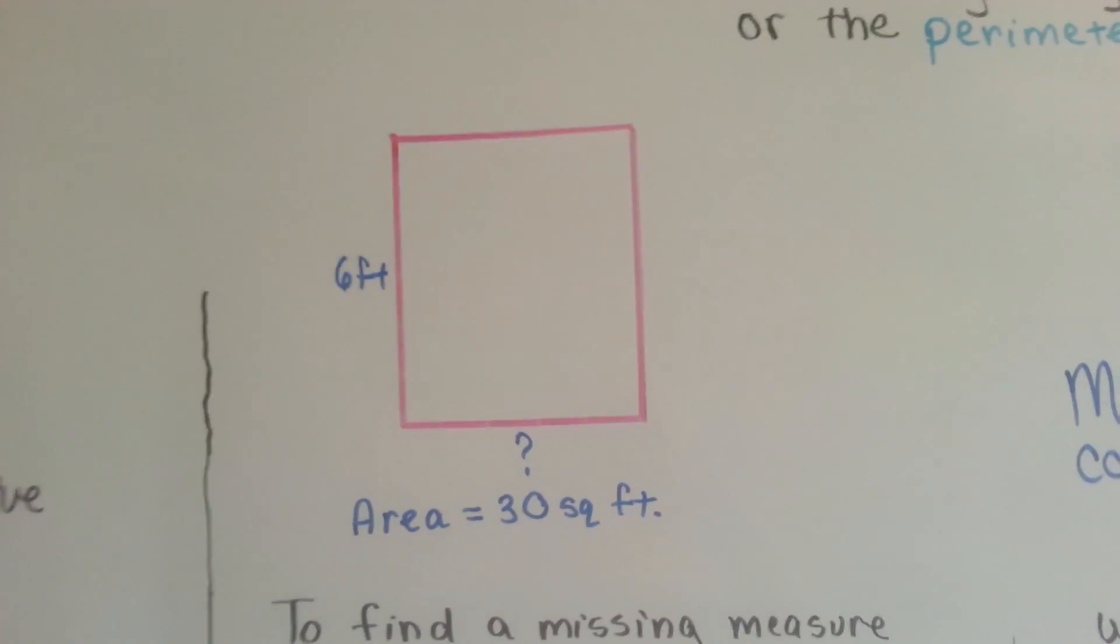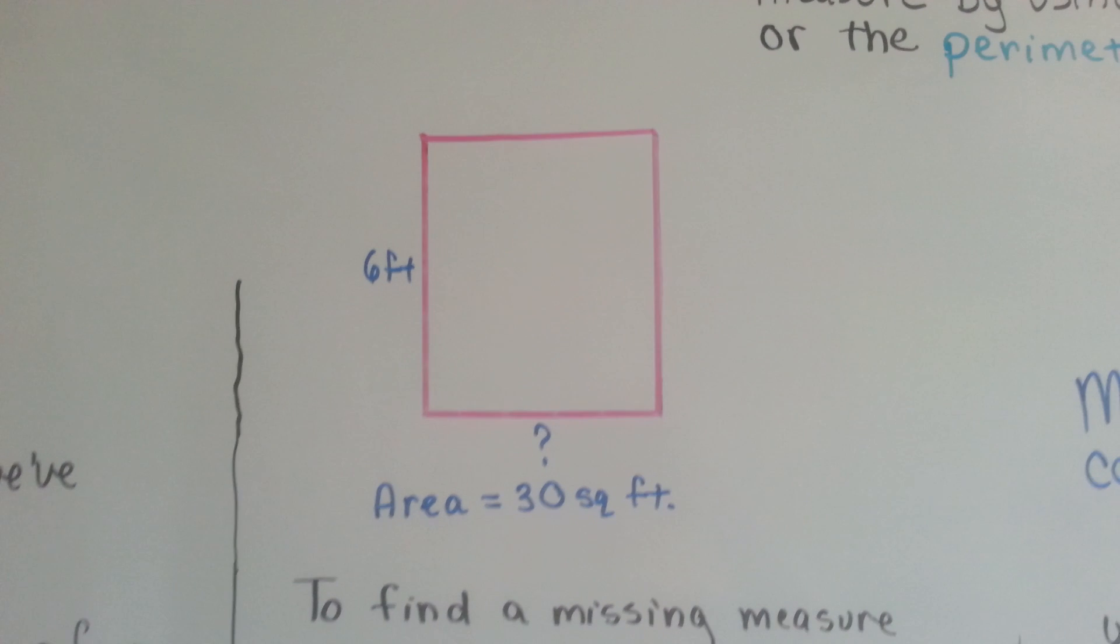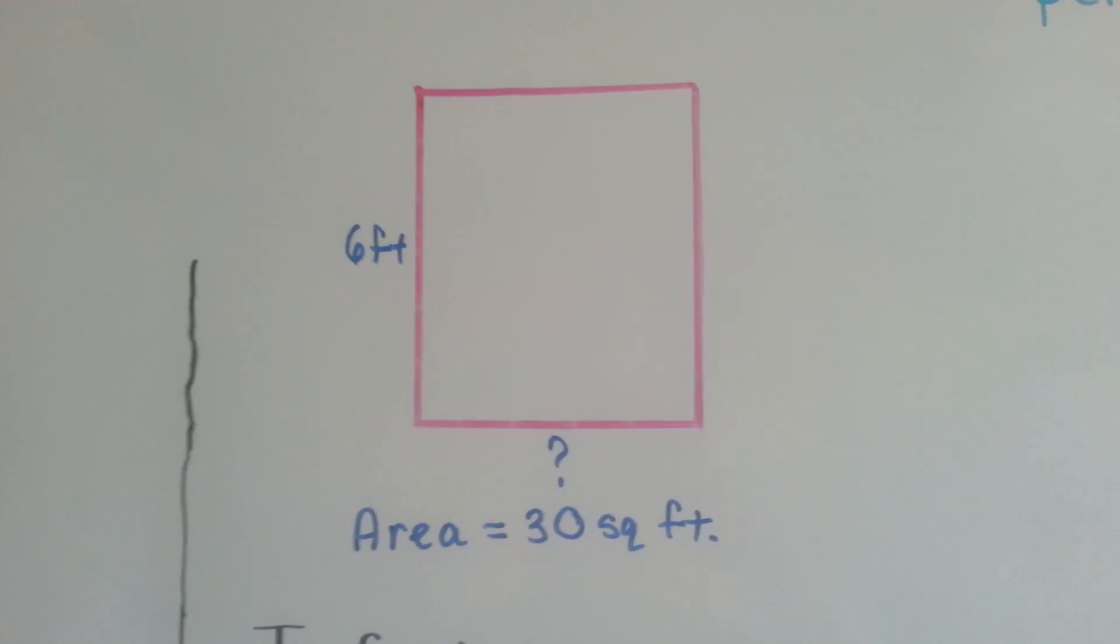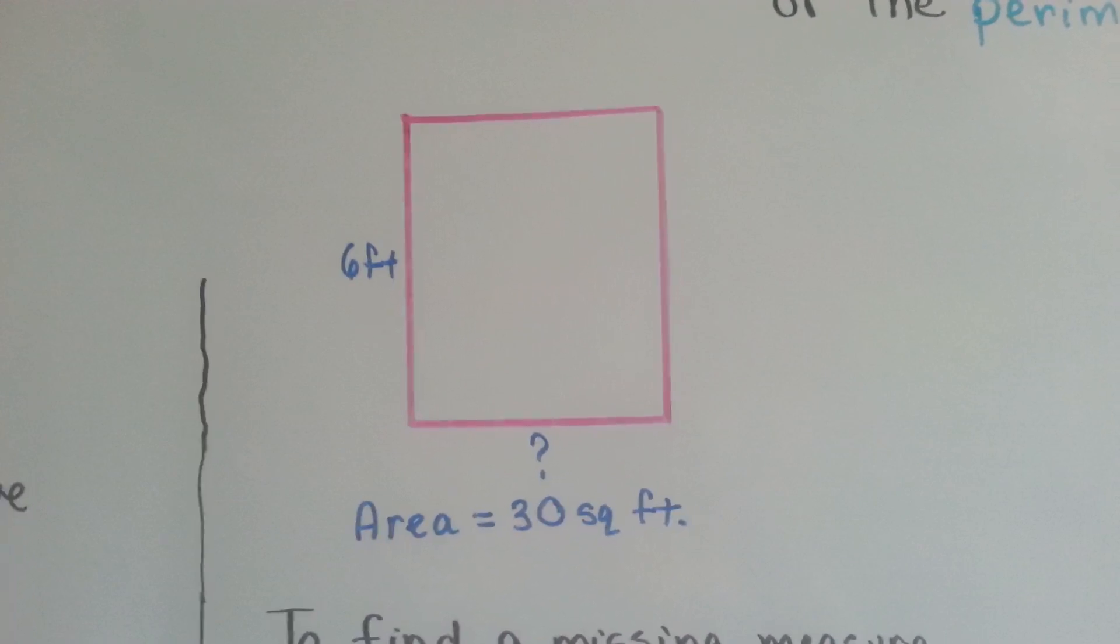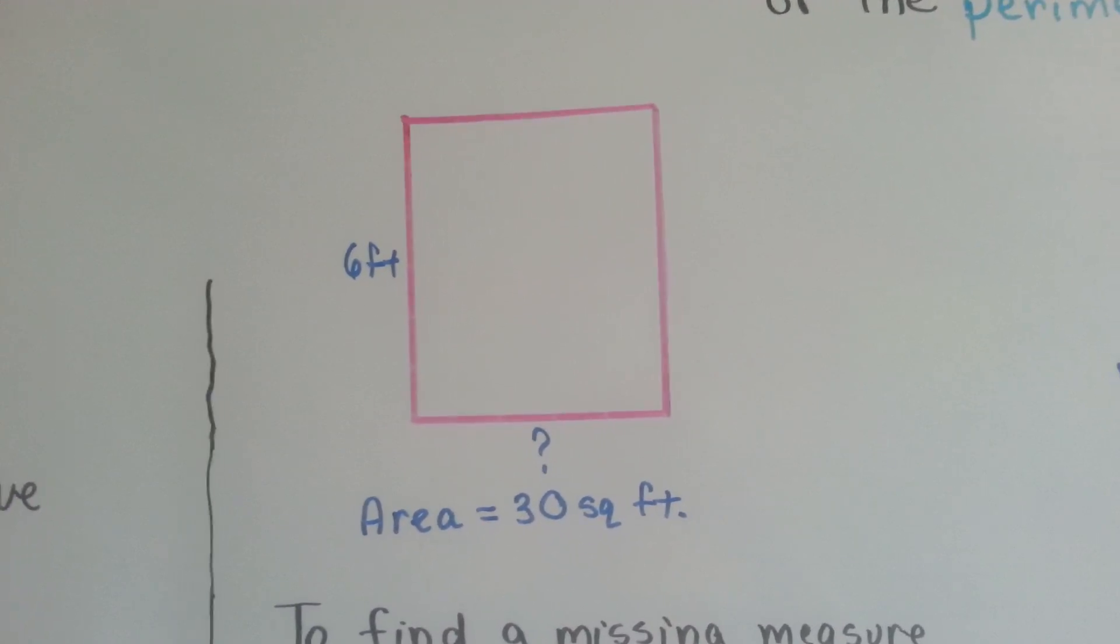Look at this pink rectangle here. We're missing a side, do you see the question mark there on the bottom? We don't have the base. We know the area is 30 square feet and we know that the side is 6 feet.